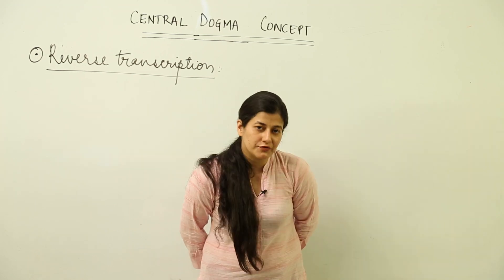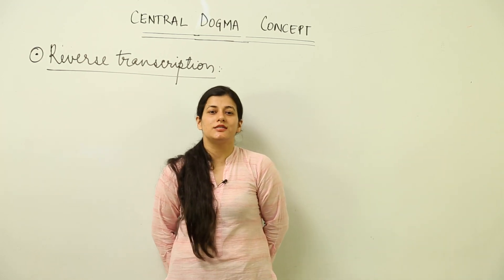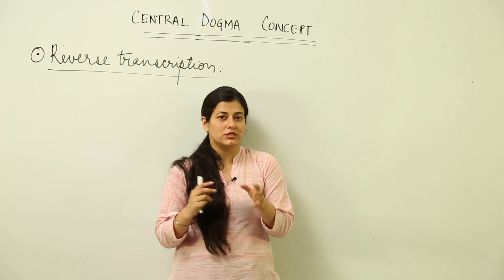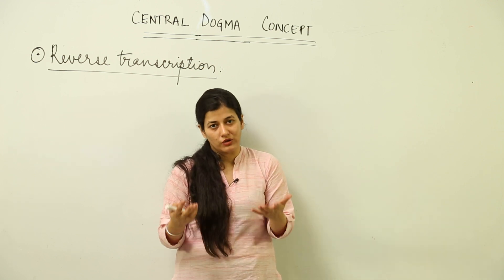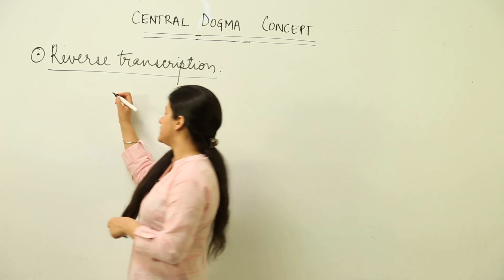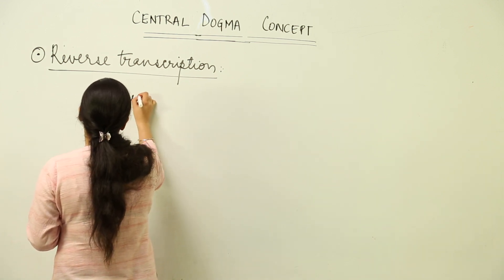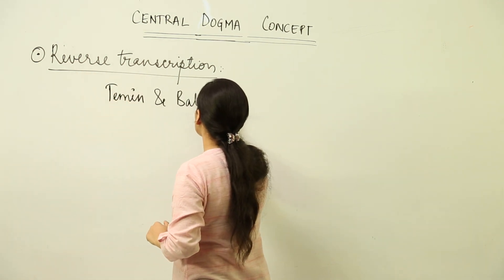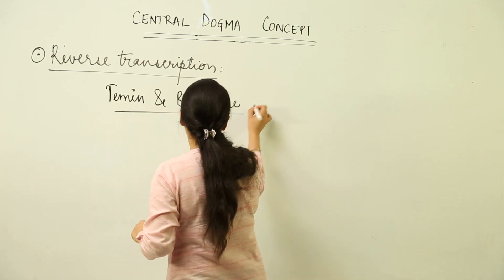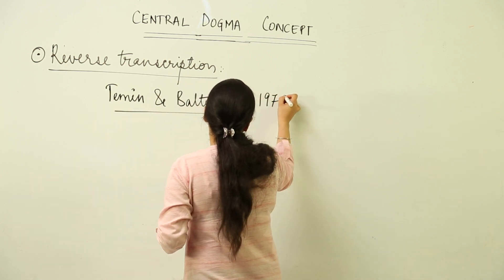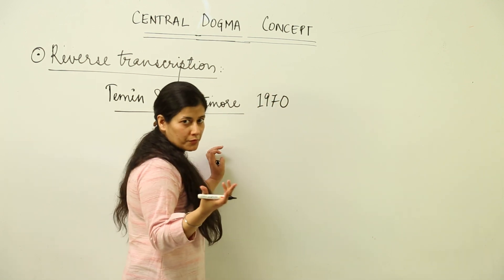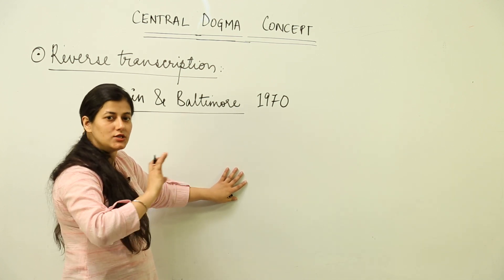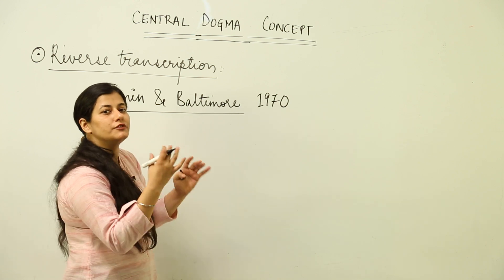In 1958, we got the central dogma concept from Crick. Later in the 1970s, something different came to the knowledge of Temin and Baltimore, two scientists, and what it was — that was reverse transcription. These two people in 1970 observed that, unlike what was proposed by Crick, the flow of information is unidirectional; they saw a different observation.